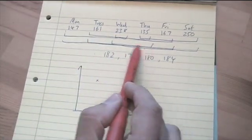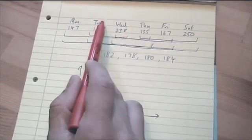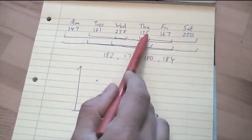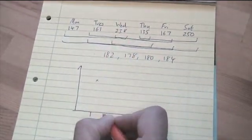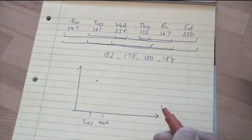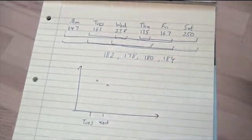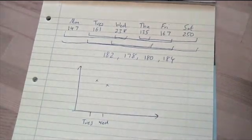The next moving average, 178, was the average of Tuesday, Wednesday and Thursday. So I'd plot that one above Wednesday because that's the middle one. The next one I'd plot above Thursday, the next one I'd plot above Friday.